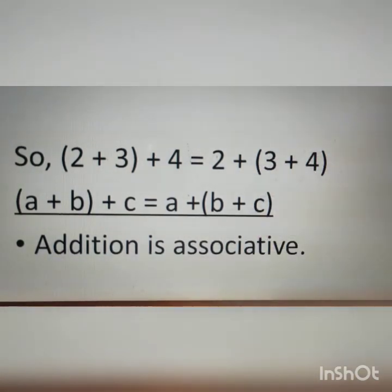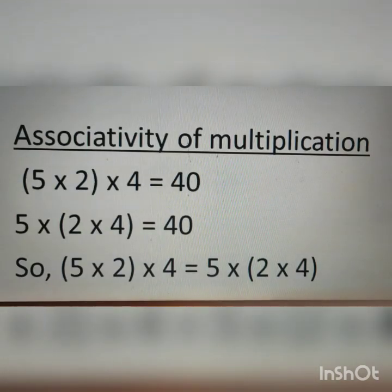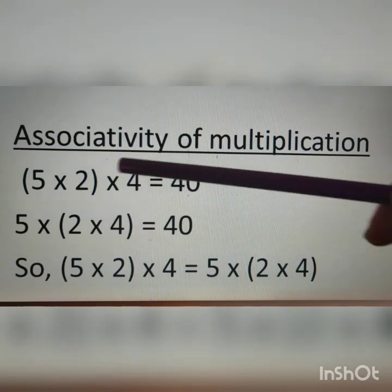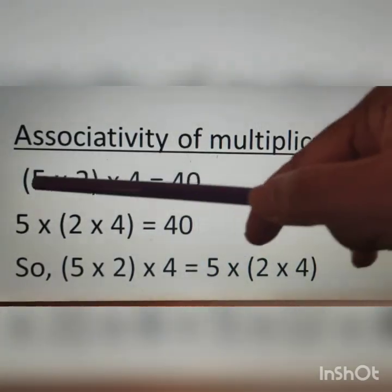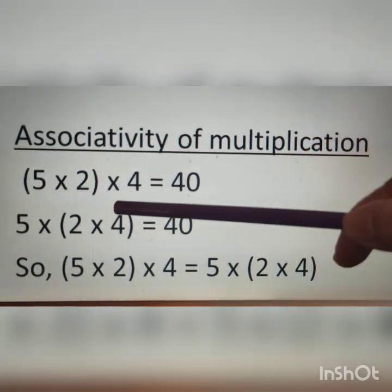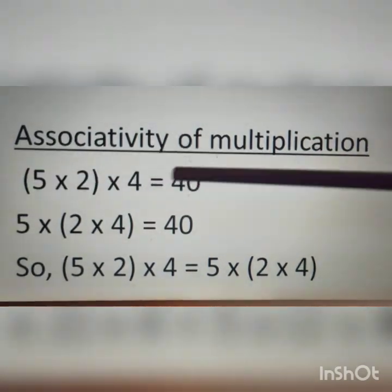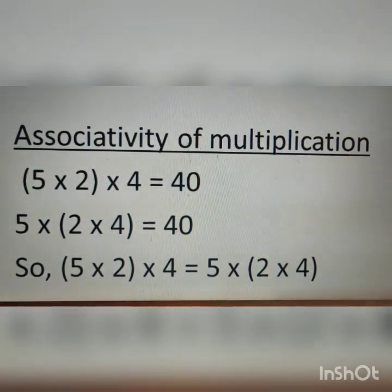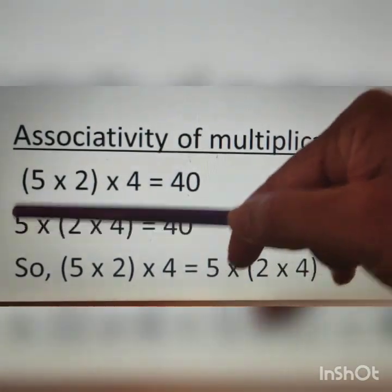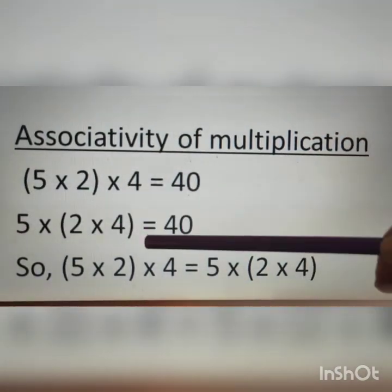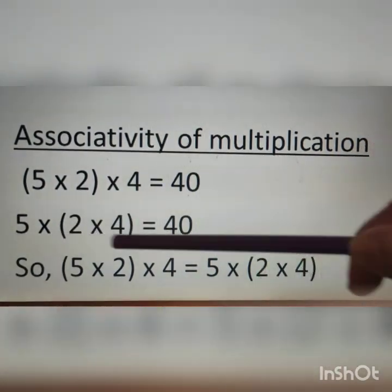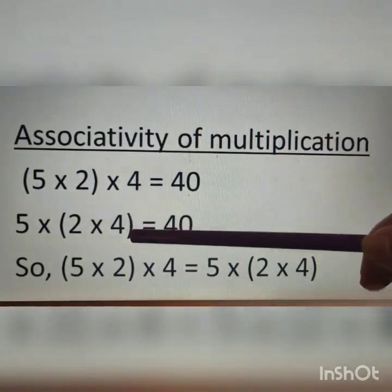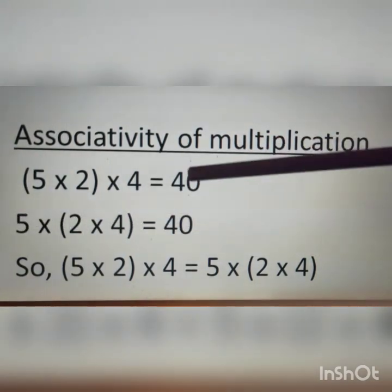Next, examples of multiplication. Here (5 × 2) × 4 — the numbers in the brackets multiply first: 10 × 4 equals 40. Similarly, in the next example the numbers remain the same but brackets are interchanged, so 2 × 4 is calculated first: 2 × 4 equals 8, then 8 × 5 equals 40.